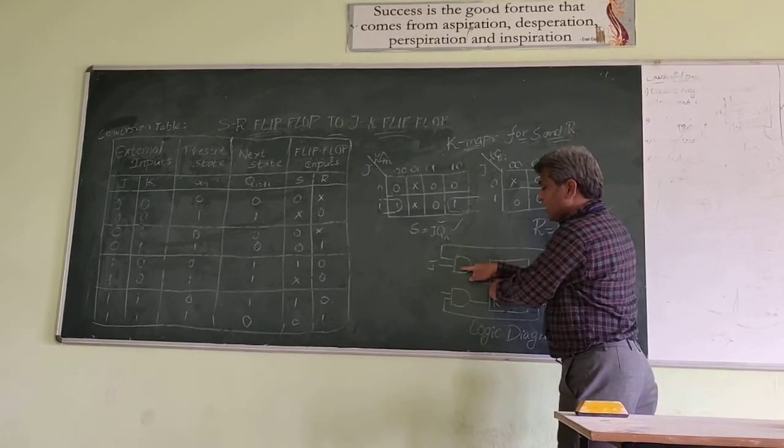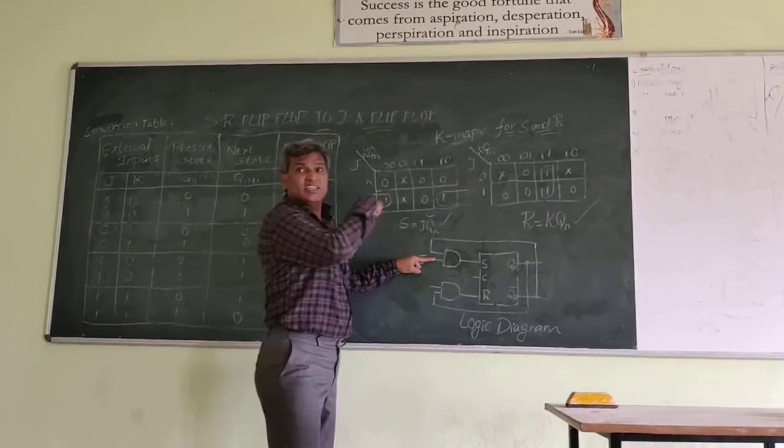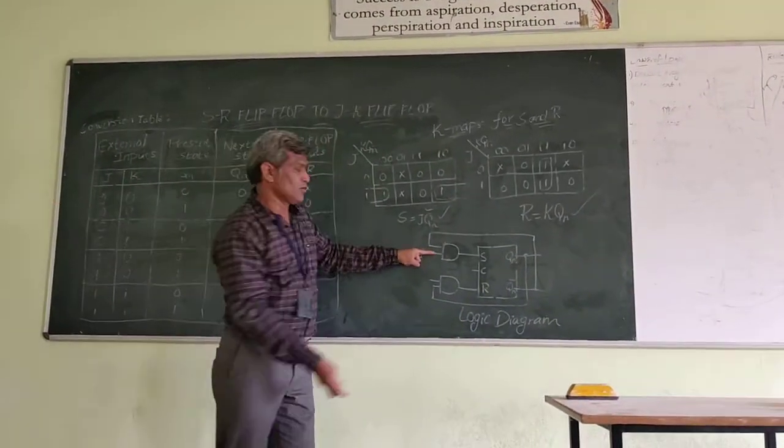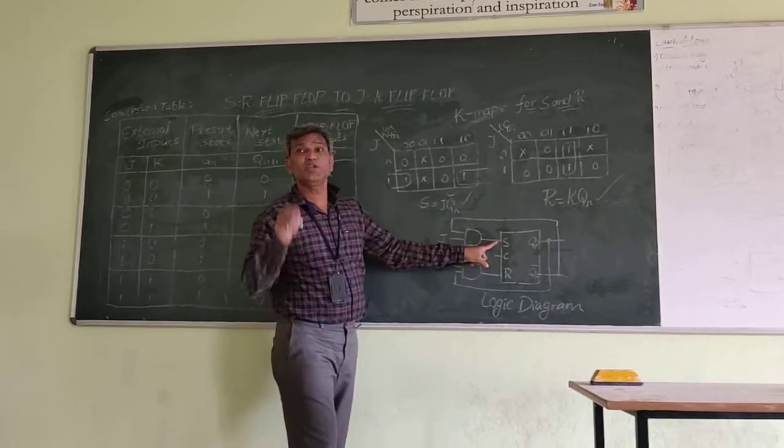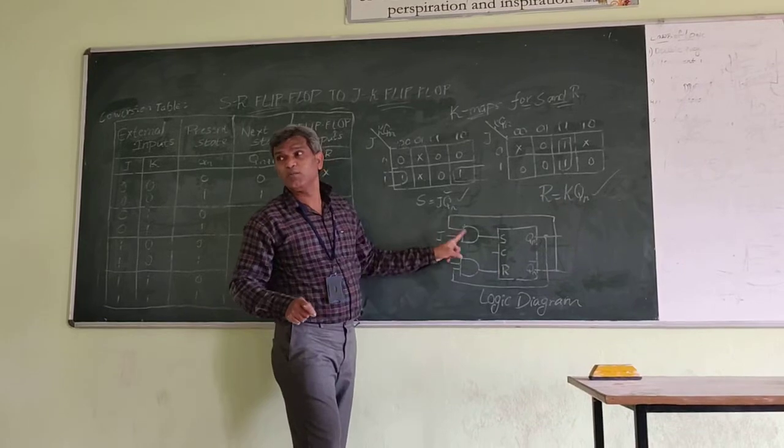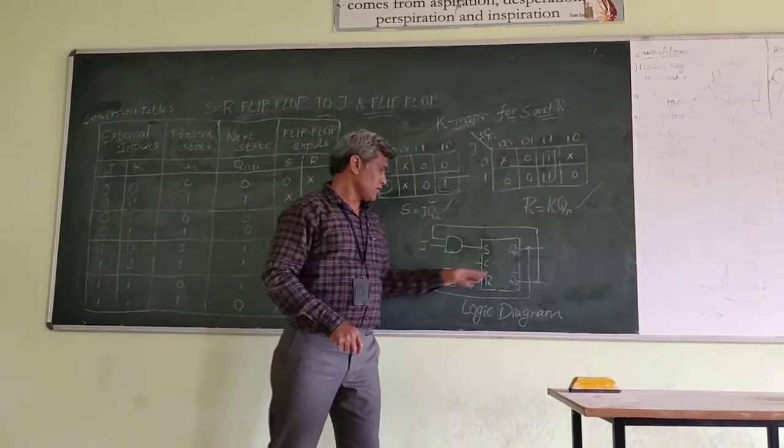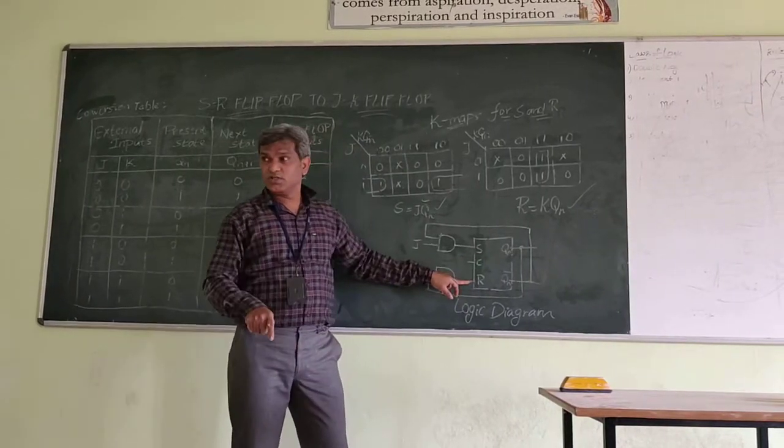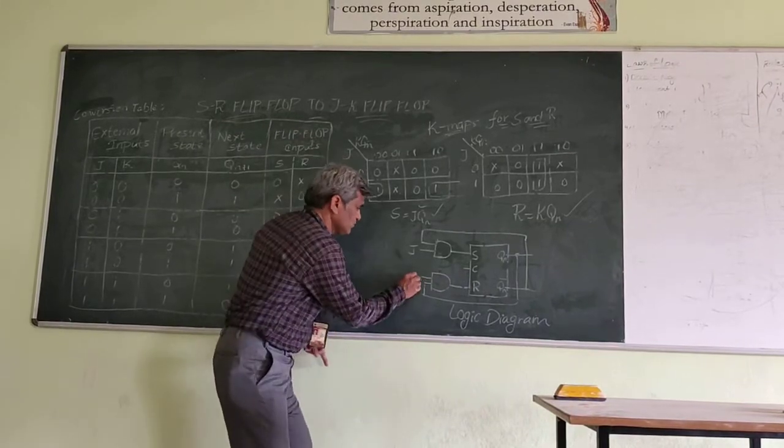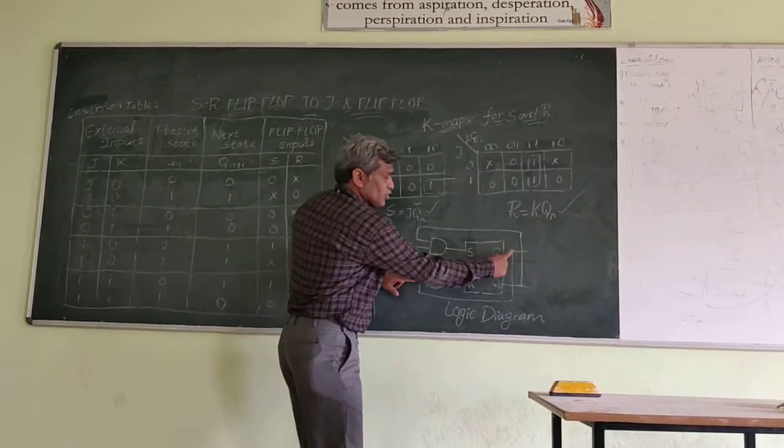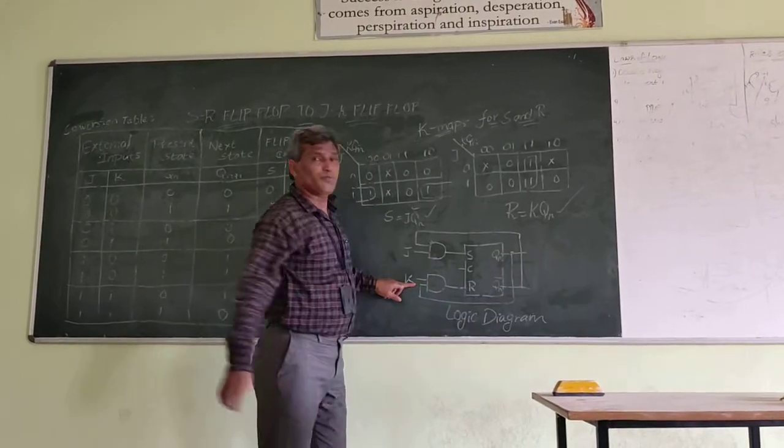We are adding J input, and the next thing has to come from Qn bar. This is Qn bar. What is S? S is the product of J and Qn bar. Next, similar thing, R. R is equal to K into Qn. R has to come from K into Qn. This is the K. Another input has to come from Qn bar. Qn. Q.